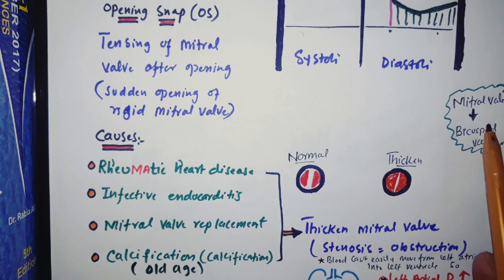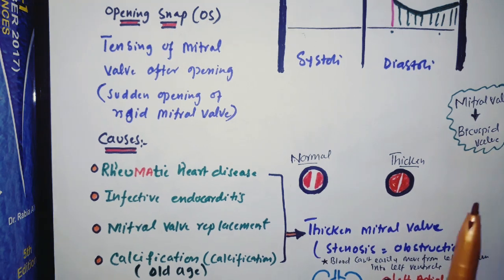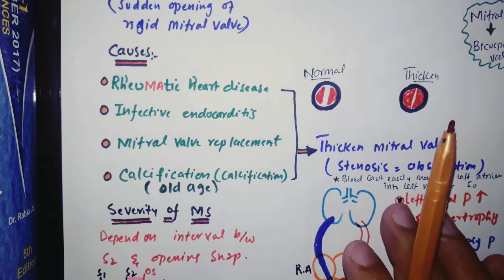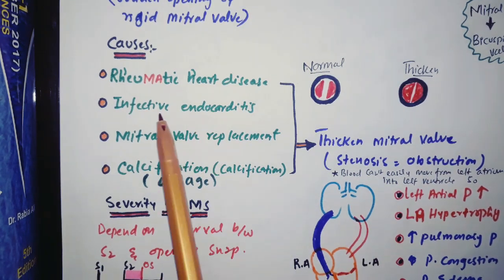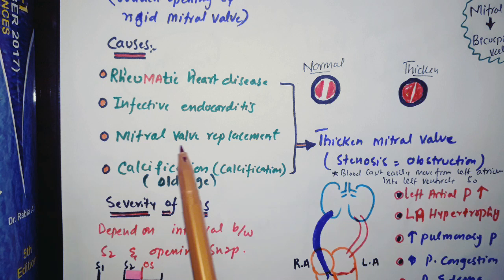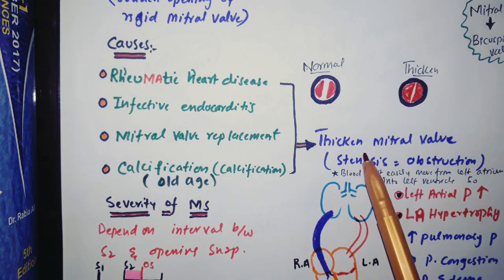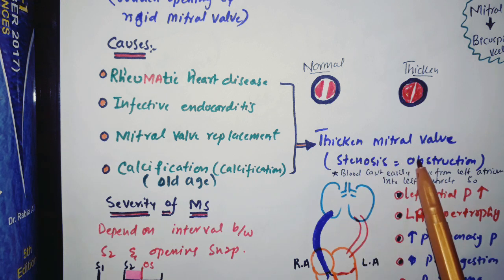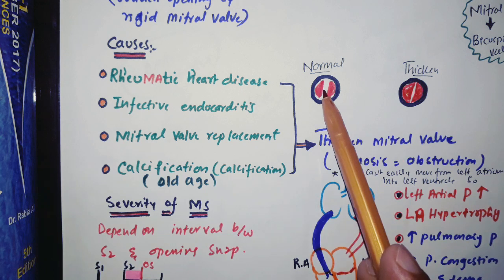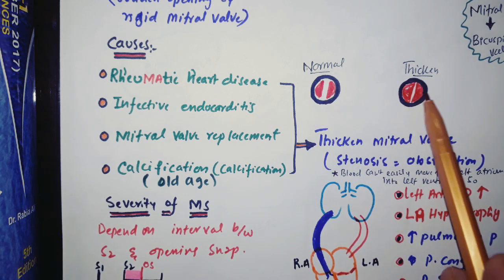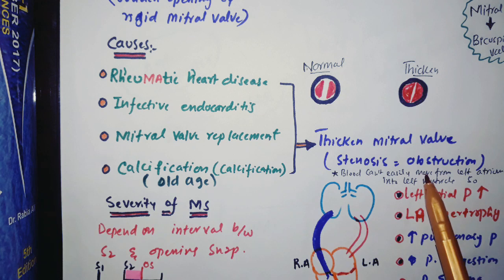Remember that the mitral valve is the bicuspid valve. Causes of mitral stenosis include rheumatic heart disease, infective endocarditis, mitral valve calcification in old age, and mitral valve replacement issues. All these problems lead to mitral valve stenosis, also called obstruction. The obstruction reduces the normal valve opening.